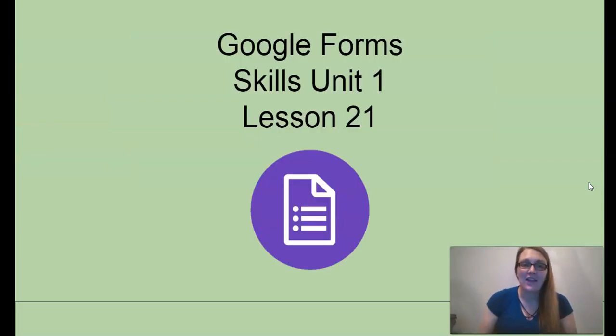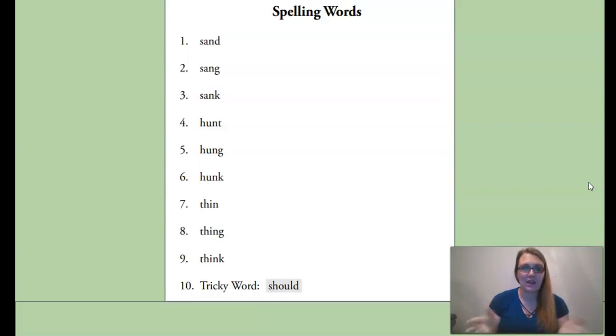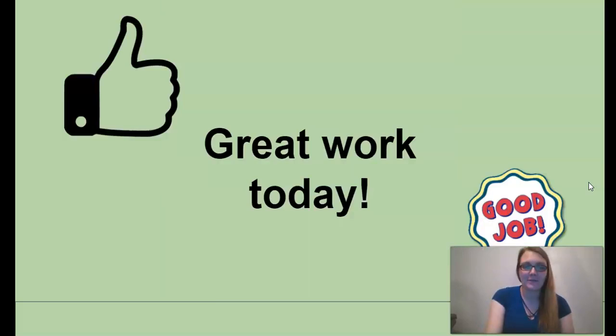All right. Now that the lesson is all over, practice your spelling words for this week. And you will complete Google Forms for Skills Unit 1, Lesson 21. Again, here are our spelling words: sand, sang, sank; hunt, hung, hunk; thin, thing, and think, with our tricky word, should. Great work today. See you guys tomorrow.